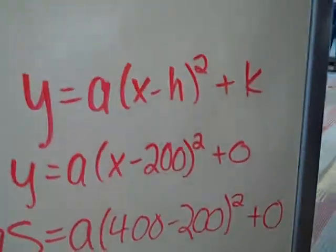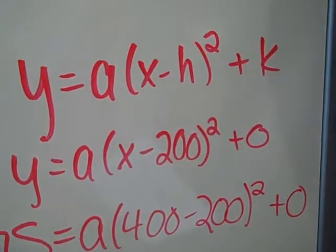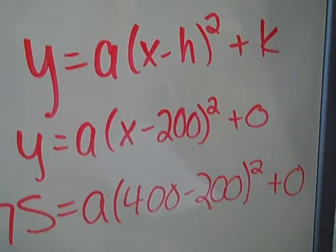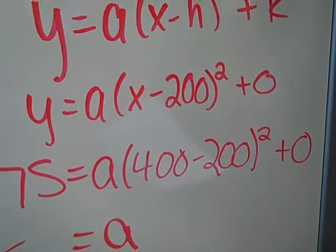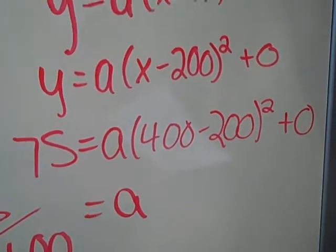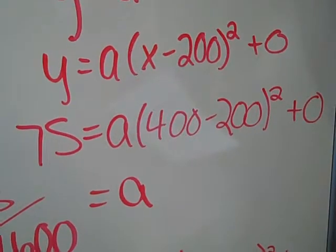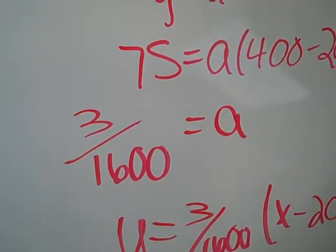To solve this, we plugged it into y equals a times x minus h squared plus k. h and k are the vertex points, so we plugged in 200 and 0. Then we knew a point on the graph which was 4, 75, so we plugged those in for y and x and solved for a. a equals 3 over 16,000.